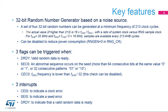The RNG peripheral is based on continuous analog noise that provides a random 32-bit value, which will be explained in detail later on. The RNG is able to generate four 32-bit random numbers at a minimum frequency of 213 system clock cycles.